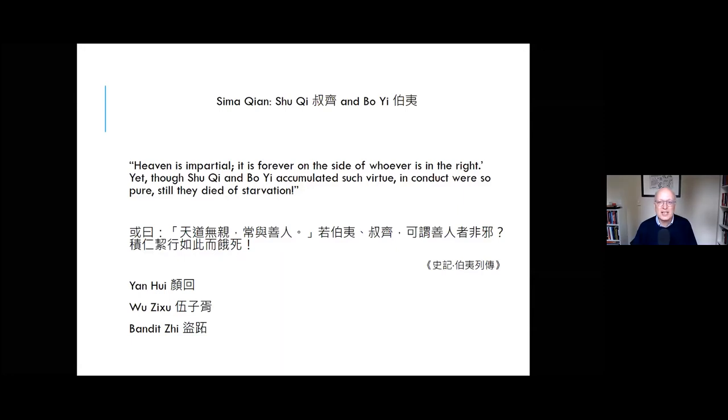Sima Qian lists opposite examples as well. He mentions the bandit who was violent, cruel, and selfish, but seems to have lived a long and happy life. Faced with the immense biographical evidence showing how sometimes the good suffer miserable ends and the wicked prosper, Sima Qian in the end could only throw up his hands and lament the caprices of fate, the inscrutable workings of destiny.